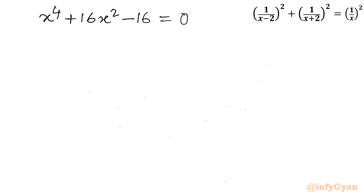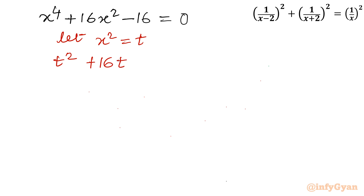This is a very manageable equation once we apply the substitution x squared equals t. So let x squared equal t. The equation becomes t squared plus 16t minus 16 equals 0.